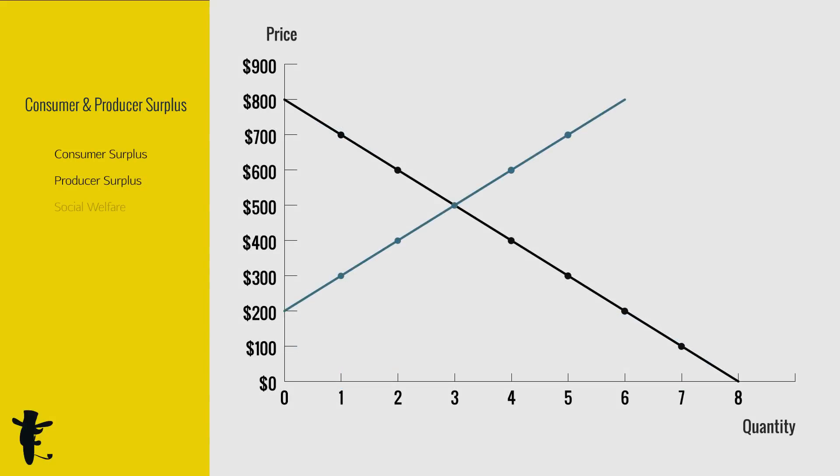On the supply curve, though everyone sells at an equilibrium price of $500, different producers have different willingness to sell. I hope to sell my computer for at least $300. Sold it at $500. My producer's surplus is $200.